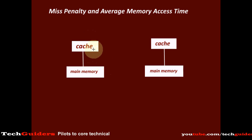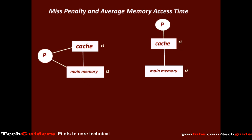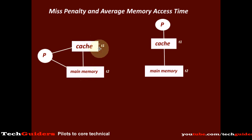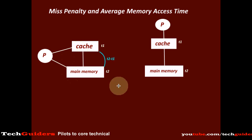Consider a two-level hierarchy with a top-level cache and the lower-level main memory. As we have discussed in simultaneous access, when the processor requests for a word, the top level is first accessed and searched for the word, but in parallel the lower level is also accessed and searched. If we find the word in the cache, the hit time is t1, and in case of a miss, we have to spend an additional time of t2-t1 to get the word from the lower level. So the miss penalty in simultaneous access is t2-t1.